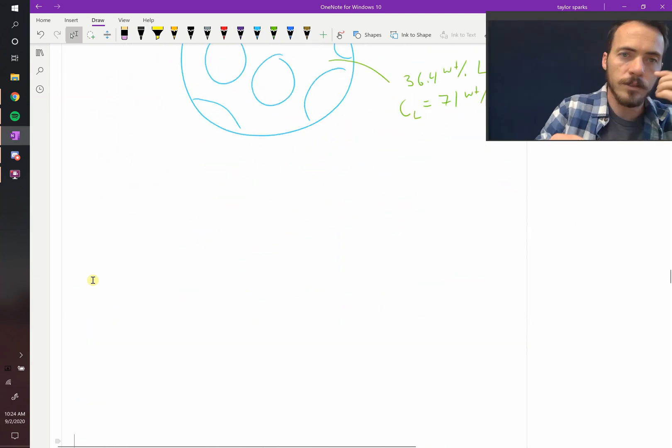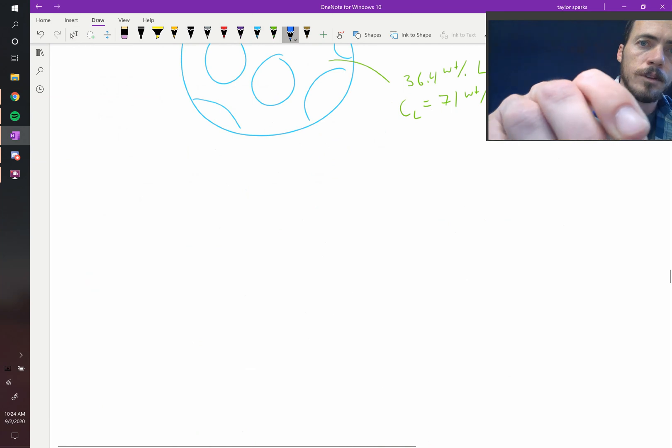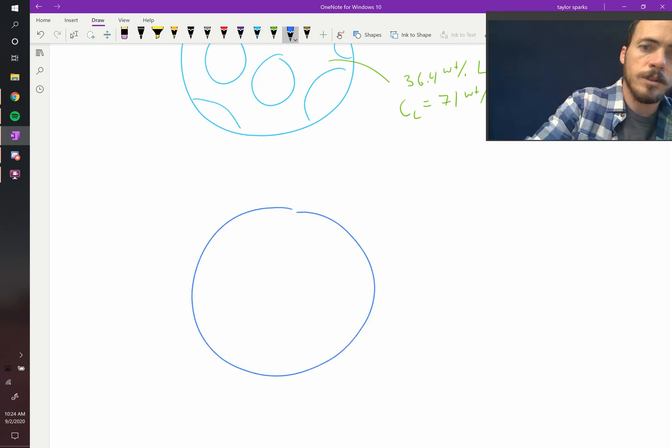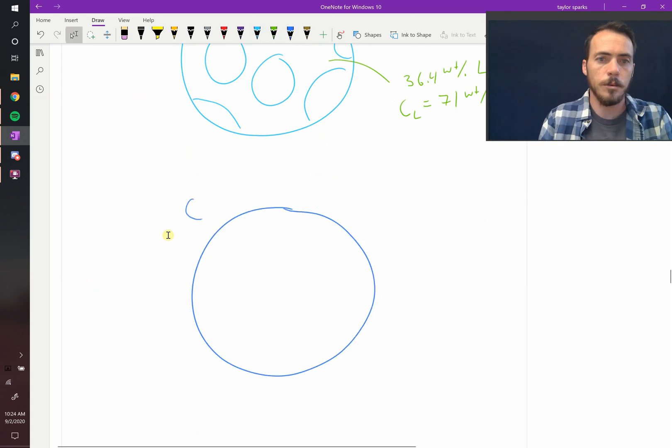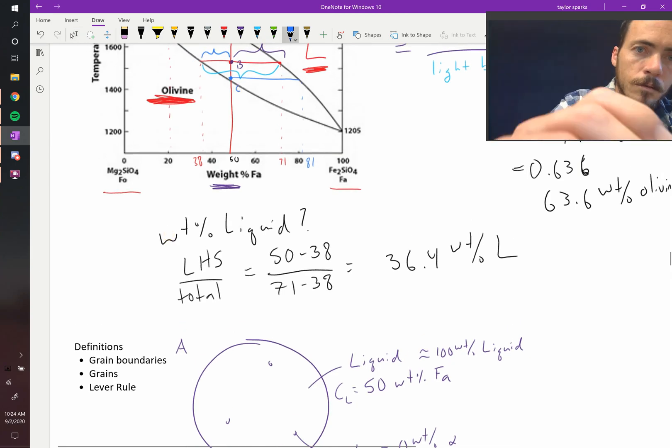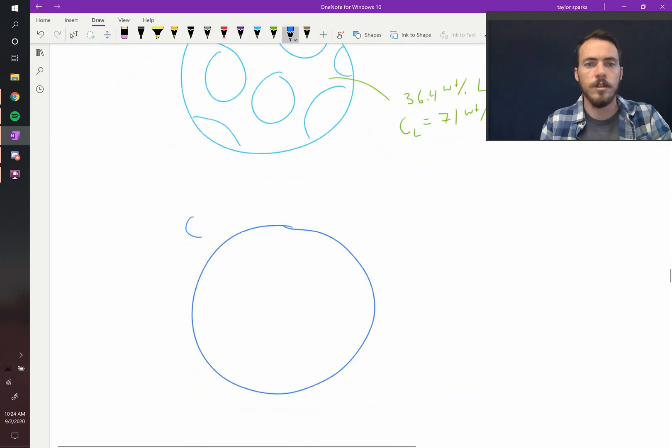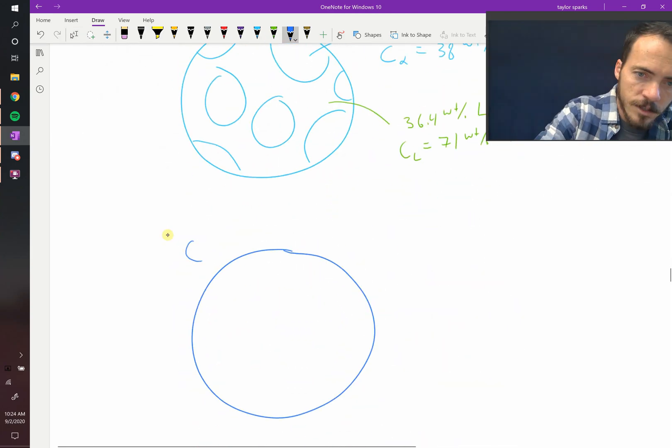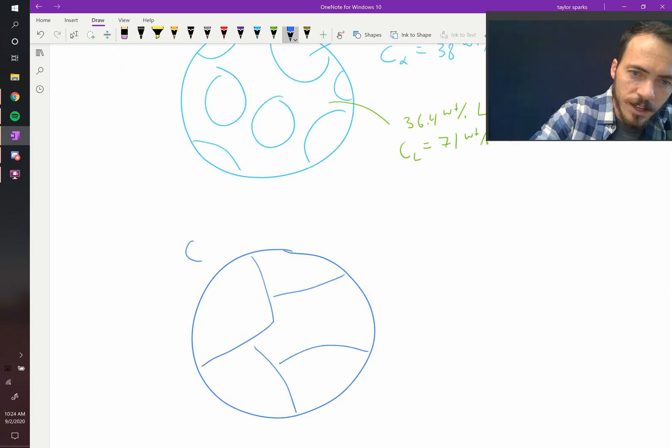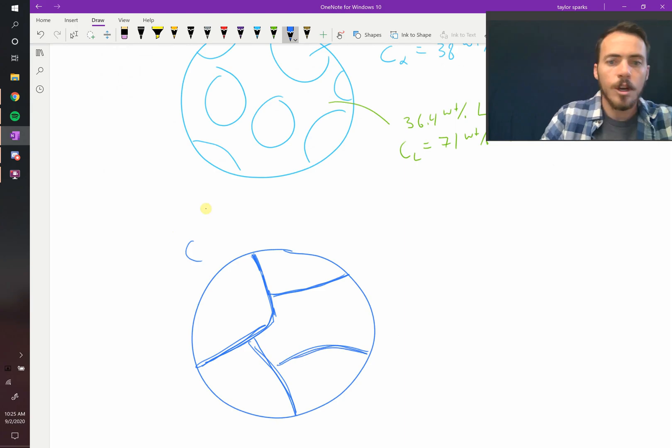So let's draw it almost entirely solid with just a tiny bit of liquid left. So we'll draw this at point C. Let's label that point C. At point C, we now have essentially a complete solid with just a little bit of liquid left at the boundaries. Just a tiny, tiny bit of liquid left at the boundaries.